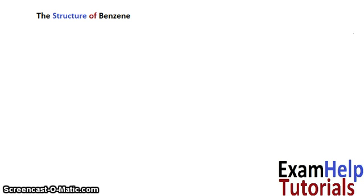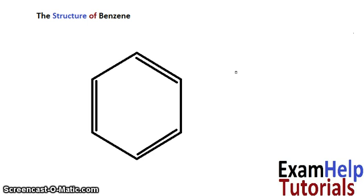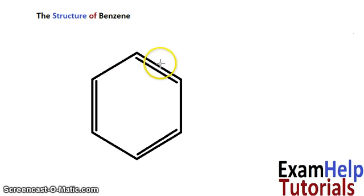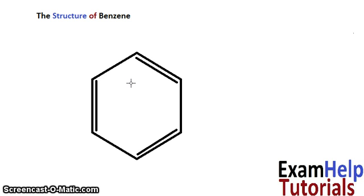The original model that really stuck was Kekulé's model, as shown here. It has a double bond followed by a single bond, double bond, single bond, double bond, single bond — so there are three carbon-carbon double bonds. Each carbon then forms another bond to a hydrogen, which gives the molecular formula C6H6.